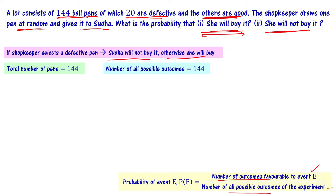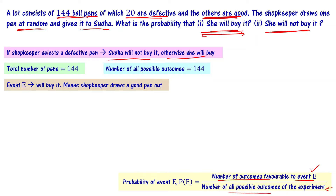Event E is defined as: Sudha is going to buy the pen. This means the shopkeeper draws a good pen out. What is the probability that he will draw a good pen?